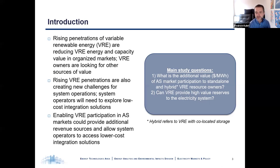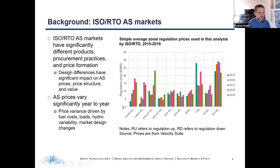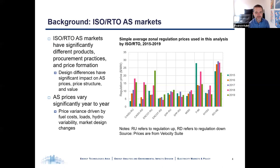Our focus is on regulation reserve markets and, to a lesser extent, spinning reserve markets. To provide context, it's important to understand that AS markets are very different across ISOs and RTOs — they have different AS products, procurement practices, and how AS prices are formed can also be quite different. These differences in AS market design have a significant impact on the results. AS prices in US markets also vary significantly from year to year as a result of changing fuel costs, loads, hydropower availability and constraints, and changes in market design and AS procurement practices. The figure on the right shows zonal AS market prices for each of the seven ISOs/RTOs, illustrating both inter-market differences and significant year-to-year variability.